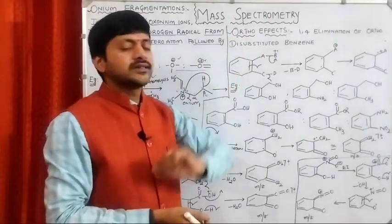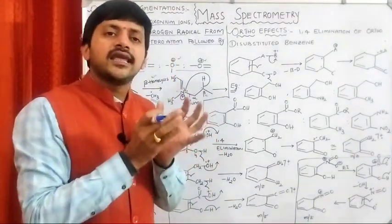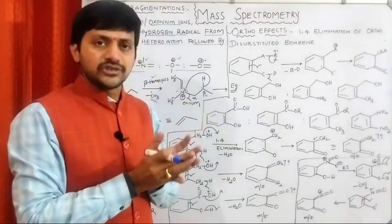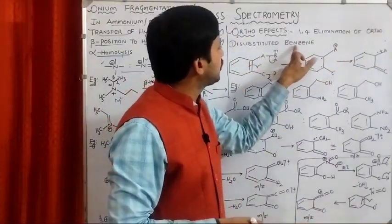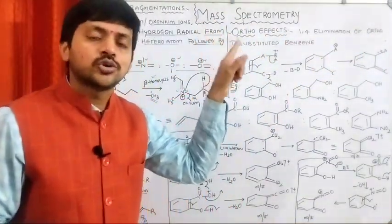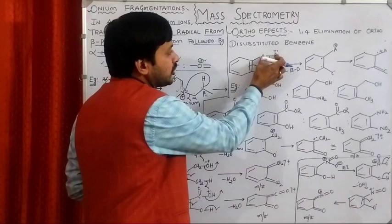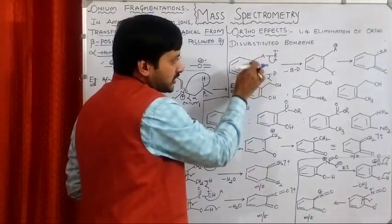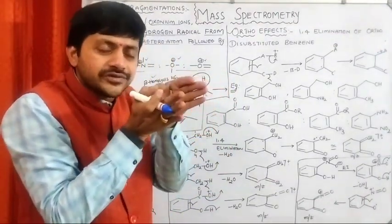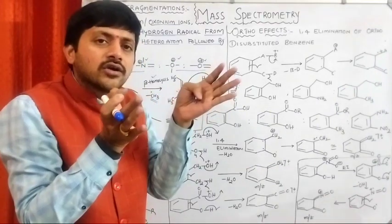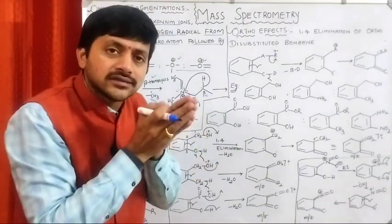We have one important topic commonly called ortho effects. The ortho effect is generally observed in disubstituted benzene. The definition: 1,4-elimination of ortho disubstituted benzene is commonly called the ortho effect. If two groups are ortho to each other, the distance between the groups will be closer and in close proximity, which is why we observe this phenomenon called the ortho effect.